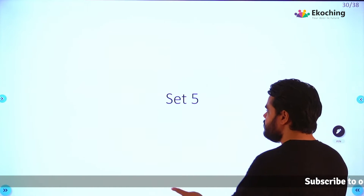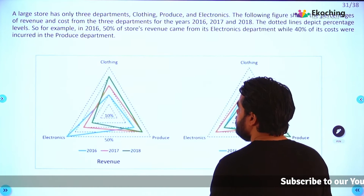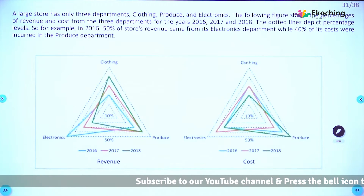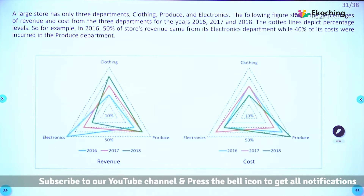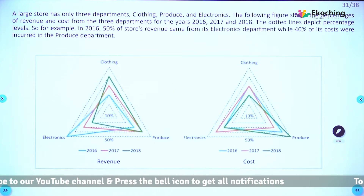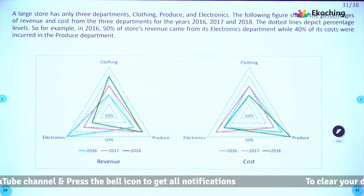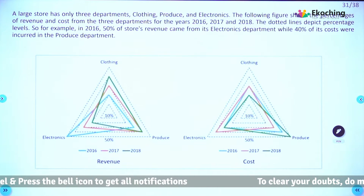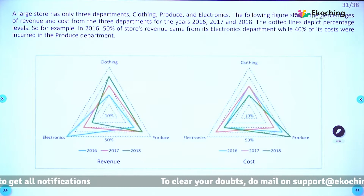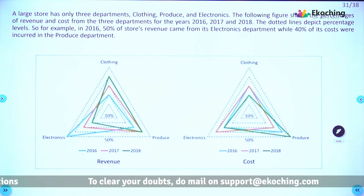This is our last set for this session. The data is on the screen — there is a new kind of graph. I'm going to give you about four minutes maximum to make sense out of this data, and then we'll quickly move on to the questions. Take a maximum of four minutes to understand, then pause the video and resume when you're done.